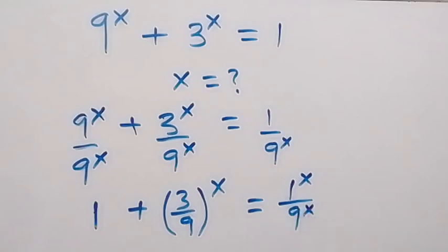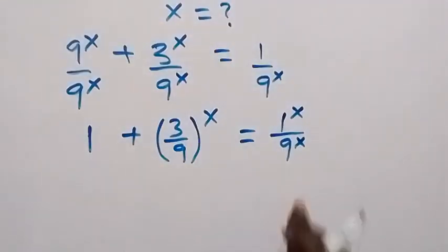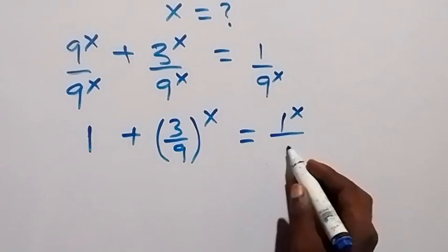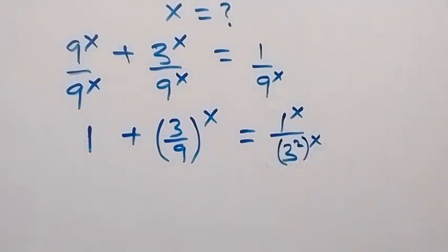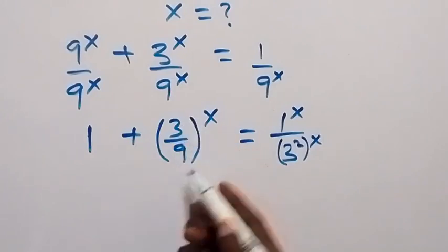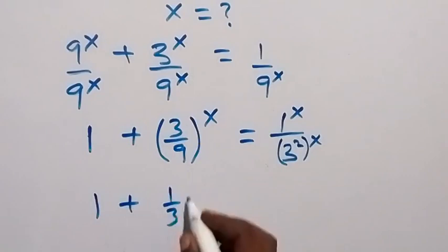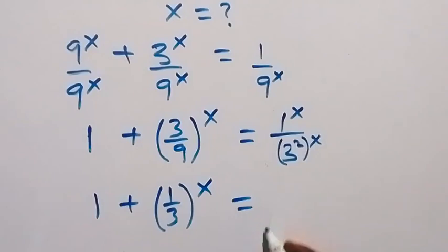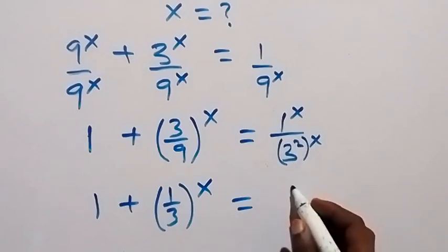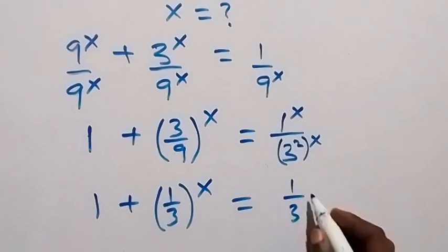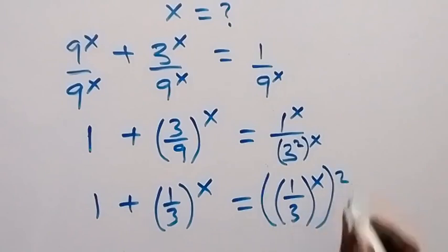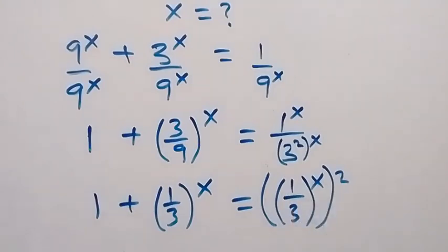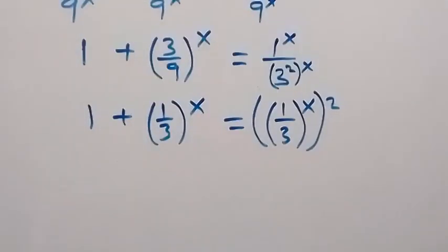We write 9^x as (3²)^x, since 3 squared equals 9. Reducing the fraction 3/9, we get 1/3. So we now have 1 plus (1/3)^x equals 1 over (3²)^x, which we can write as (1/3)^(2x), i.e., everything raised to power x and then to power 2.